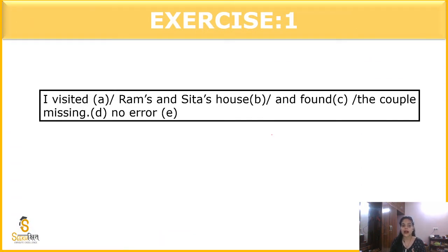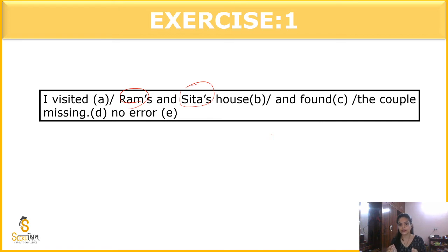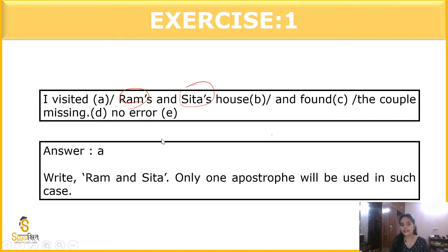The next question is: 'I visited Ram's and Sita's house and found the couple missing.' When we talk about two people sharing something — like Ram and Sita who could be husband and wife — we use only one apostrophe on the last word: 'Ram and Sita's.' Similarly, for brothers-in-law, we put the apostrophe only after brothers, not on every word.